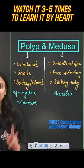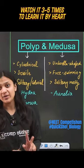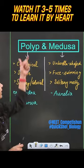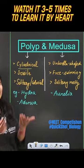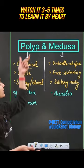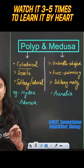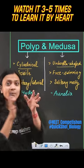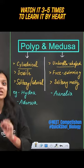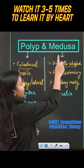When you learn about cnidarians, you get these cnidarians in two shapes. One is a cylindrical shape, like Hydra — this stage is called the polyp stage. And there are some cnidarians that you get in an umbrella shape, like jellyfish.